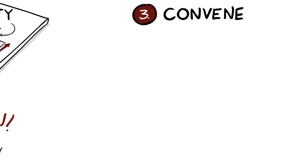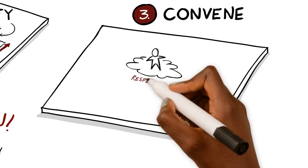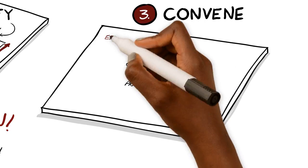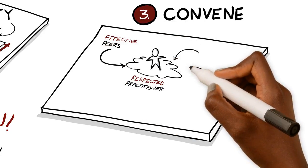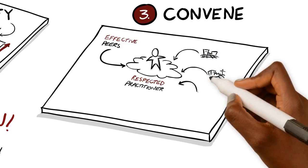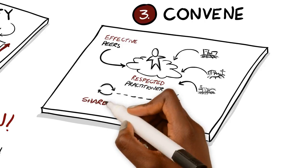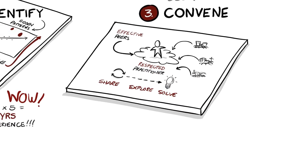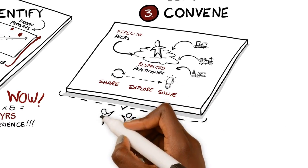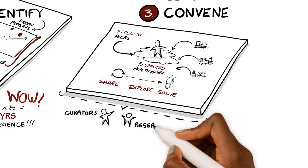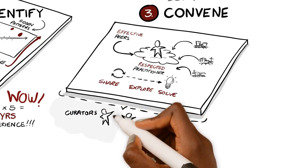Convene. For each priority service area, a respected practitioner, not a theoretical expert, convenes their most effective peers from different cities. They share knowledge to explore root causes and to pinpoint solutions. Knowledge curators listen in to capture raw insights and identify questions for in-depth research.